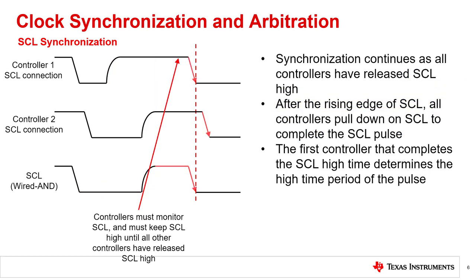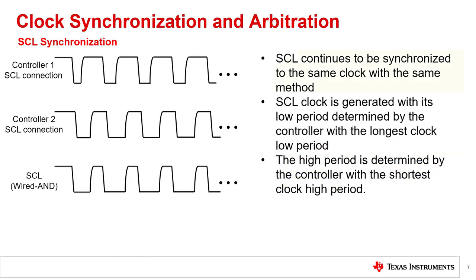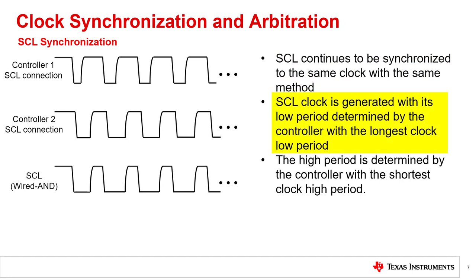Similarly, after the start of the serial clock pulls, all the controllers pull down on SCL to complete the serial clock pulls. Again, with the wired AND connection, SCL is then pulled down with the first controller that responds with pulling down SCL. The first controller that completes the SCL high time period determines the high time of SCL from the wired AND connection. The synchronization of the SCL clock continues for subsequent clock pulses between all active controllers. Each SCL clock pulse is generated with its low period determined by the controller with the longest clock low period, and the high period is determined by the controller with the shortest clock high period.